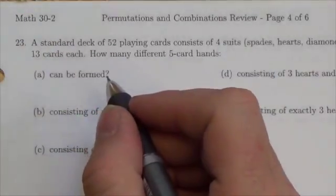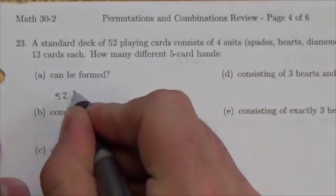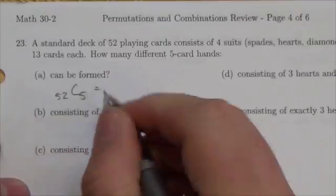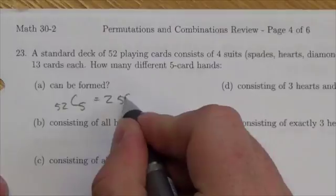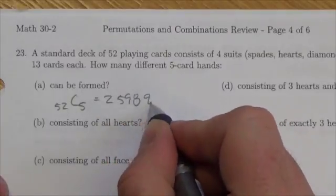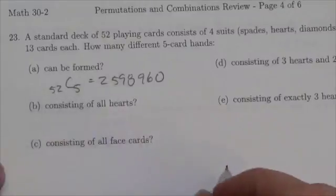Order doesn't matter when you're putting cards in your hand. You've got 52 cards to choose from, and we're going to choose five. So 52 choose 5, and when you go to your calculator, you'll get 2,598,960 different unique ways you can do that.